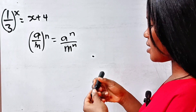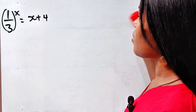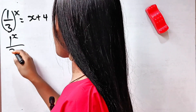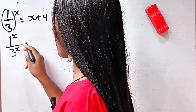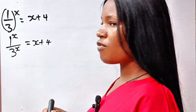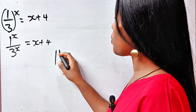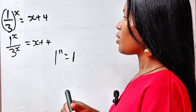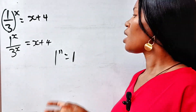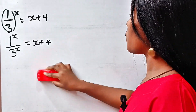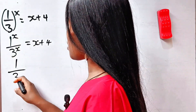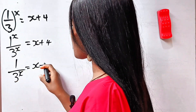That simply means we can write this as 1 to the power of x divided by 3 to the power of x, equal to x plus 4. Note that 1 to the power of n is still equal to 1 — for example, 1 to the power of 1 million still gives you 1. Therefore we write this as 1 divided by 3 to the power of x, equal to x plus 4.